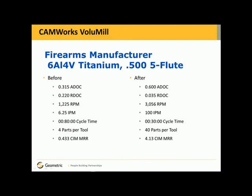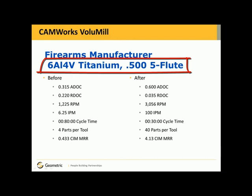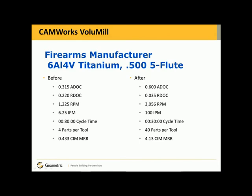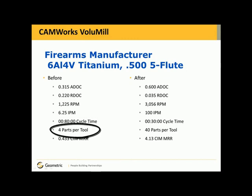Let's look at another example. This is a firearms manufacturer using 6Al-4V titanium with a half-inch five-flute end mill. Again, the axial depths of cut are much greater using Volume Mill, while the radial depth of cut is much less and RPMs are higher. Cycle time is thirty minutes versus eighty minutes without Volume Mill. And parts per tool went from four parts per tool before Volume Mill to forty parts per tool after — a tremendous amount of savings.